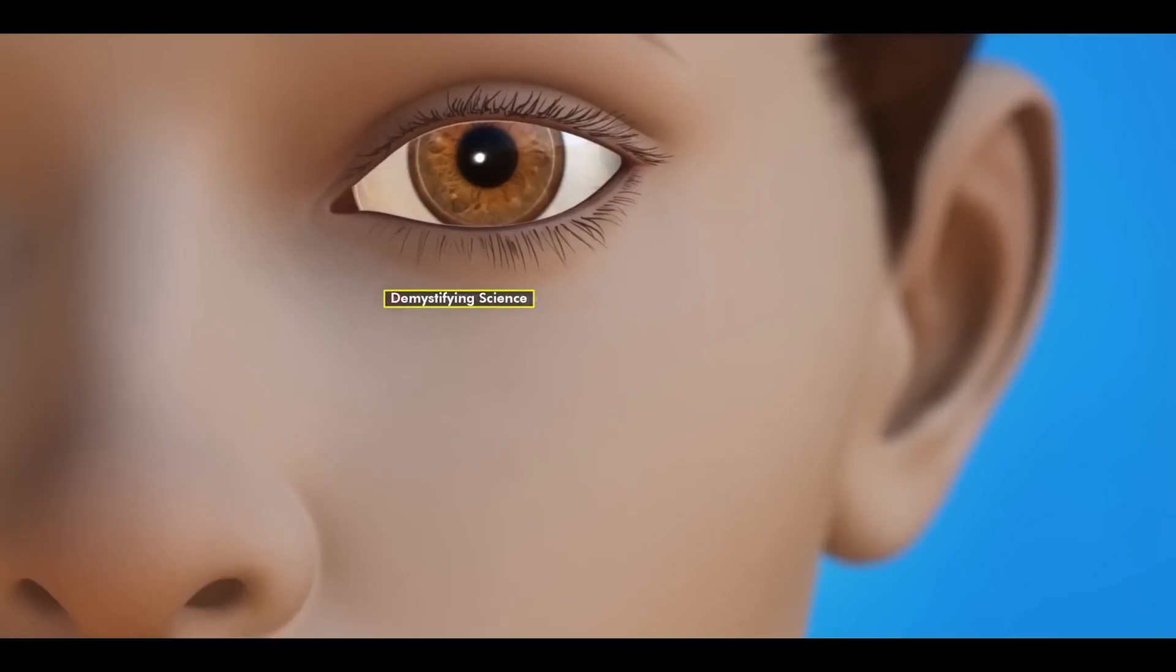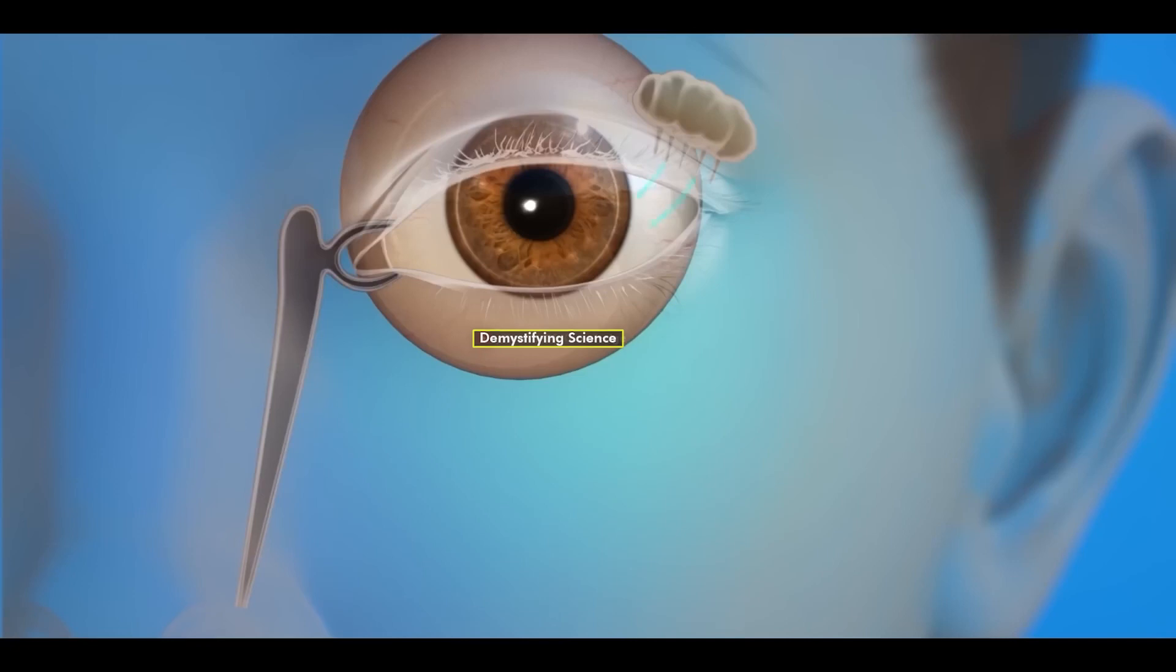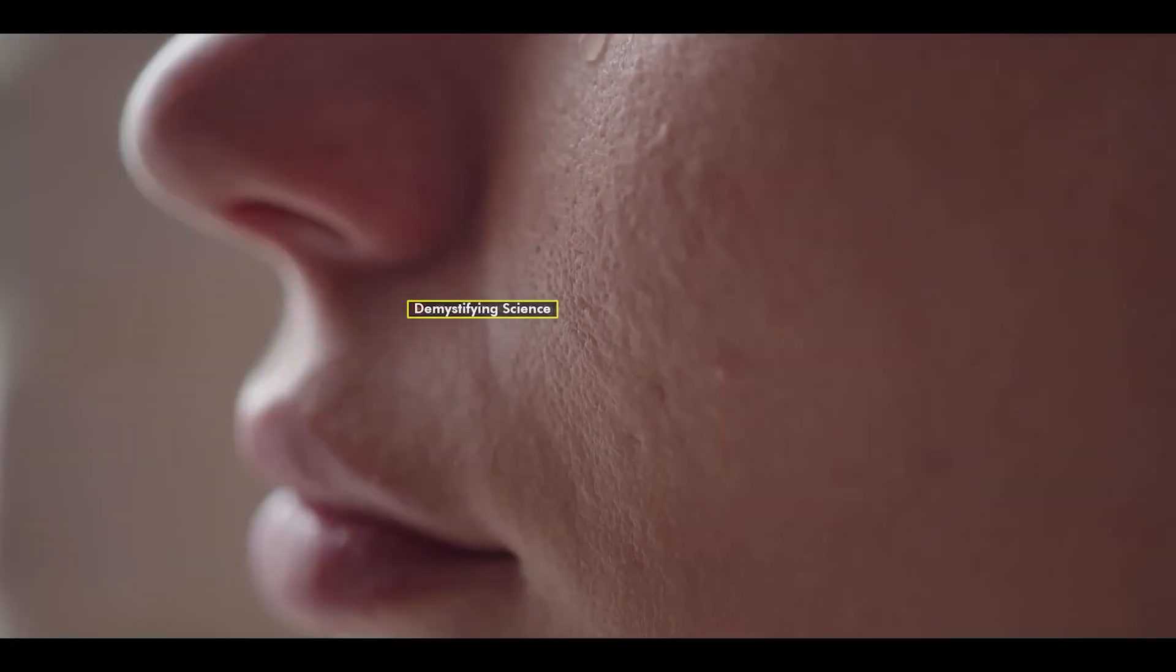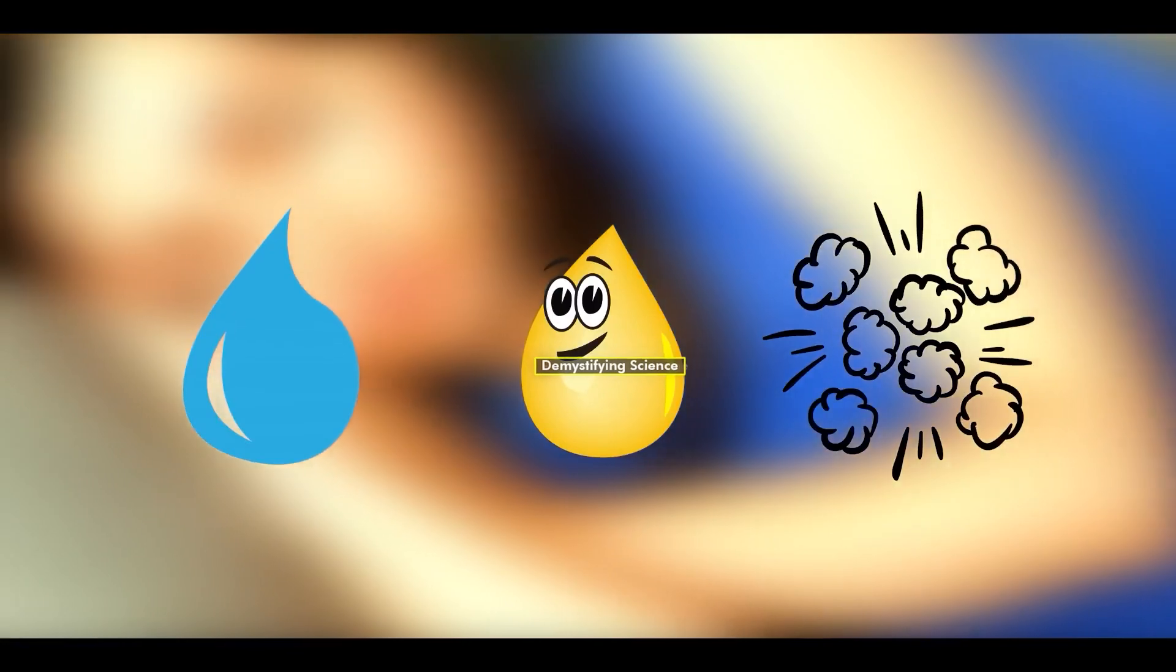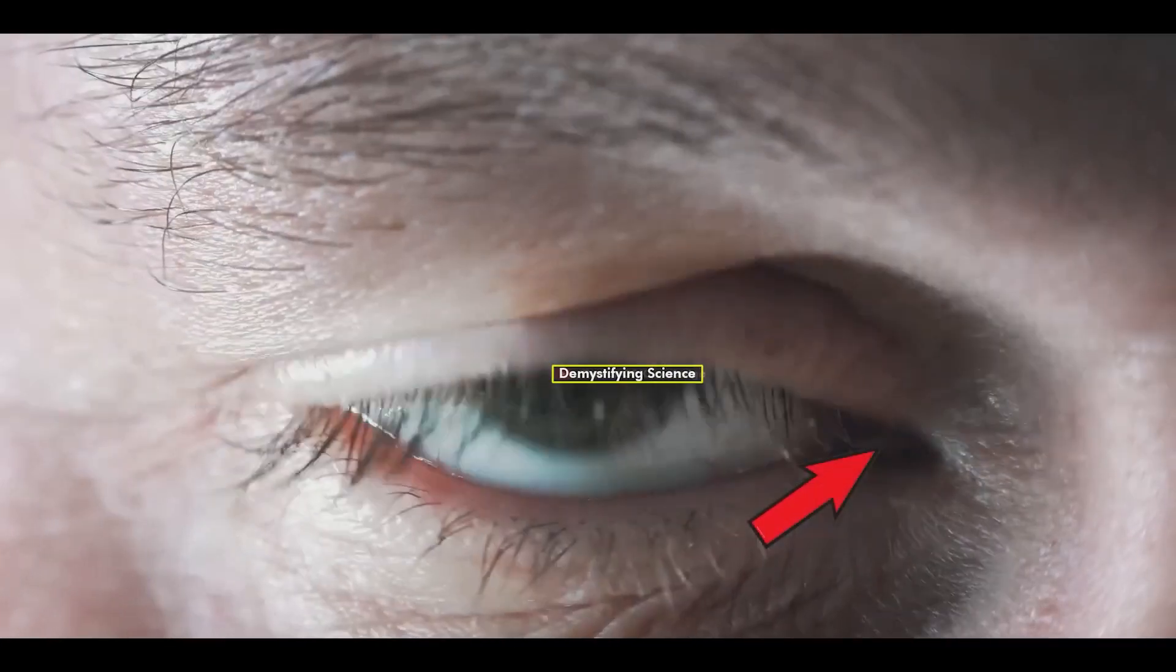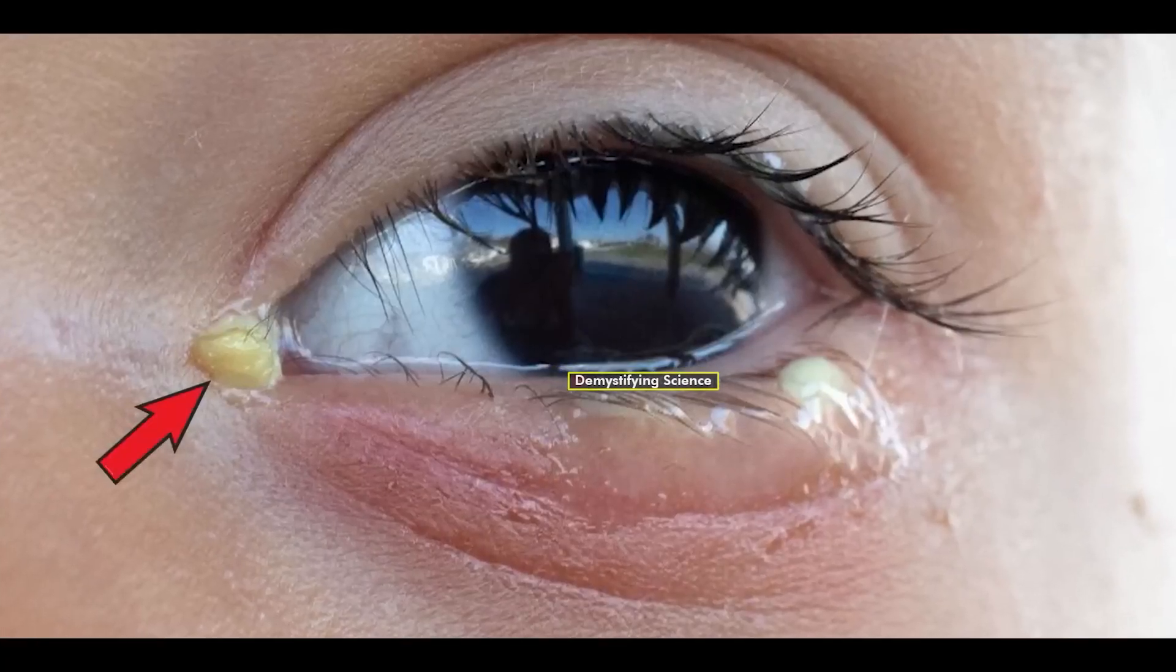During the day, our eyes remain open, allowing tears to spread easily over the eye surface. However, while sleeping at night, tear production continues, but due to closed eyelids, tears with mucus and dust particles accumulate in the corners of the eyes, leading to the formation of eye boogers.